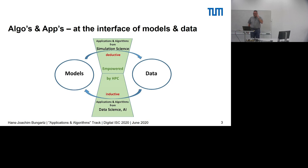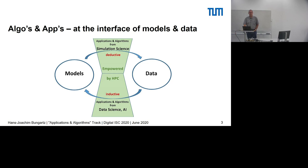Looking at the role algorithms and applications play — that's very important. It happens at the interface of models and data. Simulation science influenced business by transforming models into data, and applications and algorithms did that transformation. Now data science and artificial intelligence turn data into models, and again it's applications and algorithms that do the job — both significantly empowered by high performance computing.